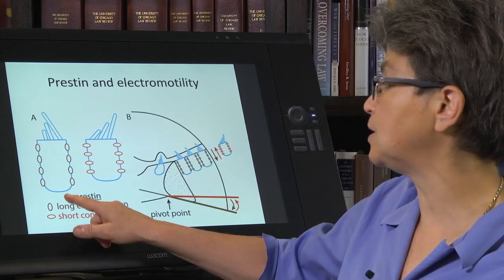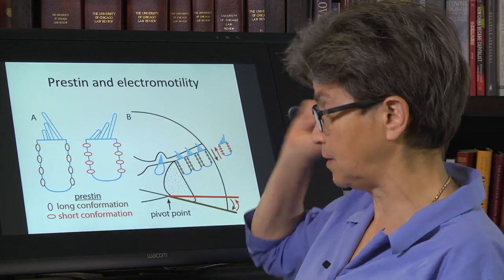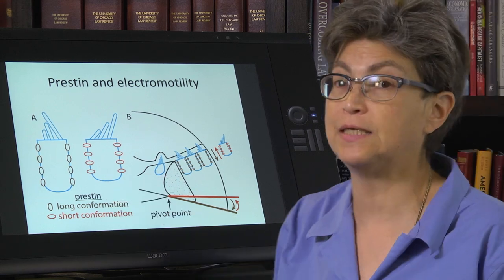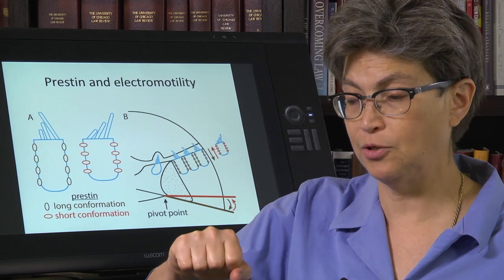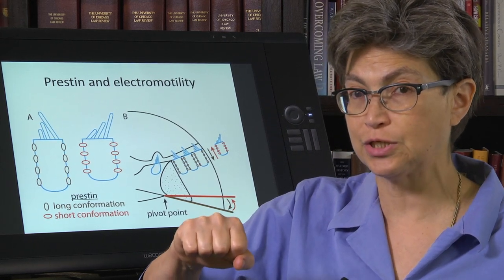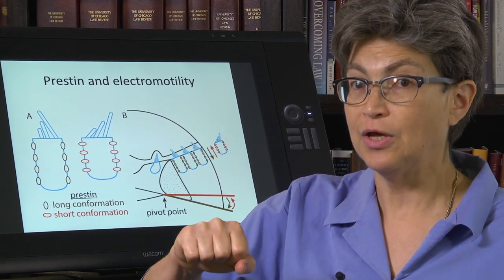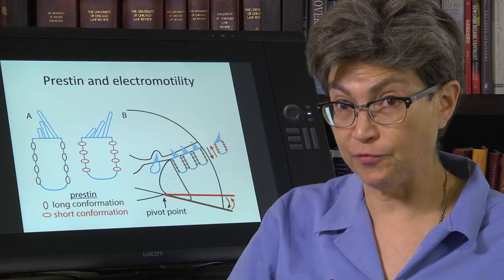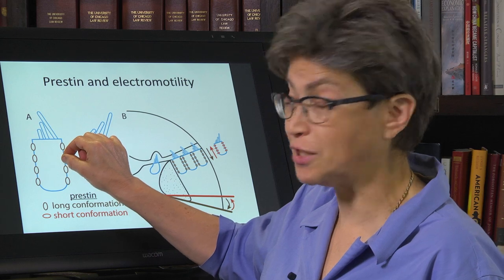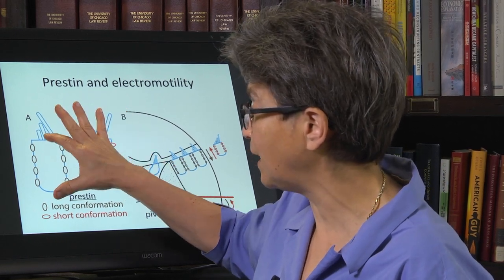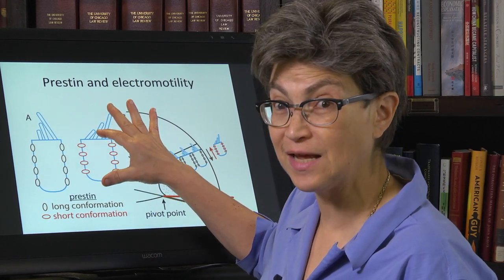They're going to do it using a molecule called prestin. What prestin is, is essentially a molecular motor. It is a molecule that is going to change its conformation in response to voltage, but it's going to change its conformation so much that it either shortens or lengthens the length of the cell.